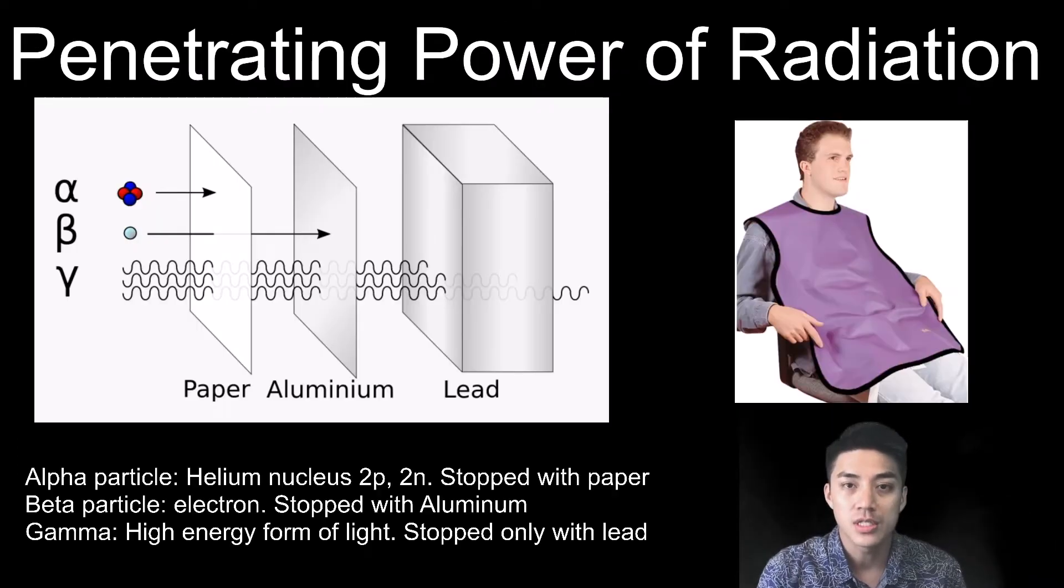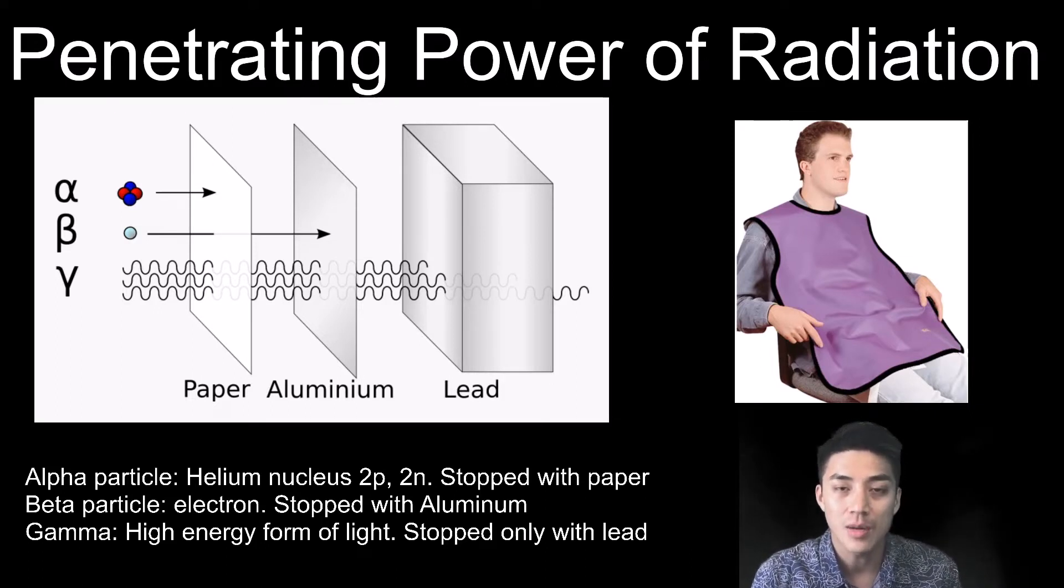An alpha particle is simply a helium nucleus without the electrons. It's basically two protons and two neutrons.